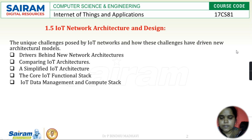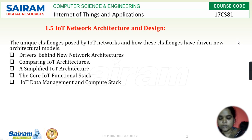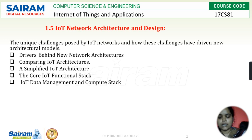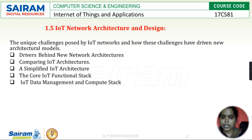Architecture is meant with a group of components or elements together — only then we can call it an architecture. So we can define network architecture as a system with a group of components or elements in IOT, which includes sensors, actuators, protocols, cloud services, layers — all the things which make this IOT network system.